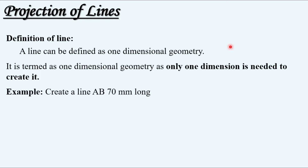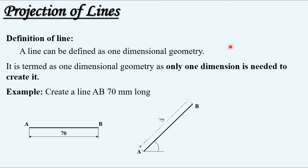Let us take an example for better understanding. The example says: create a line AB 70 mm long. This is the line AB of 70 mm length that is horizontal. Someone else might create line AB at a particular angle — any angle — with the same distance of 70 mm, or you can have a vertical line A to B, 70 mm. These three different solutions are all correct because in each case a 70 mm long line AB is being created.